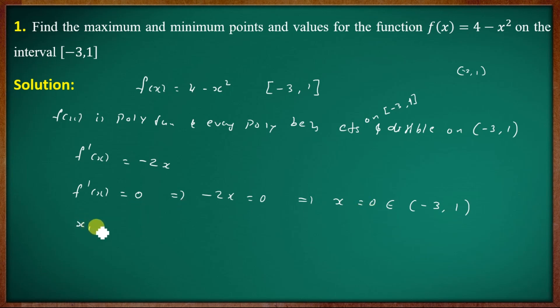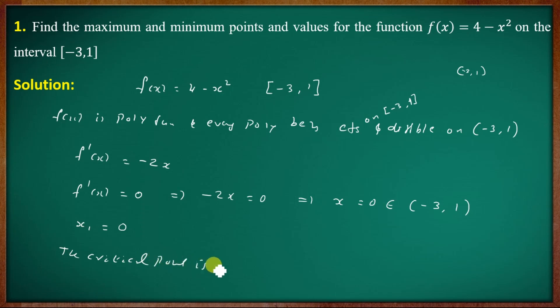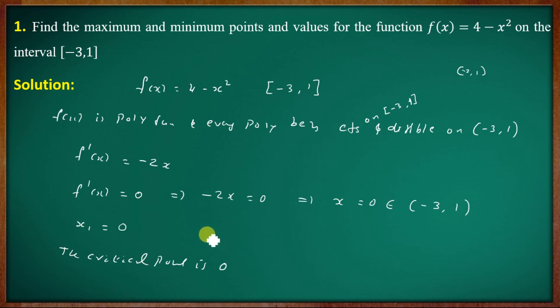List x₁ = 0 as the critical point. The critical point is 0. For the list, x₁ = 0. Now compute the corresponding f(x) values. The interval is [-3, 1] with critical point x₁ = 0.